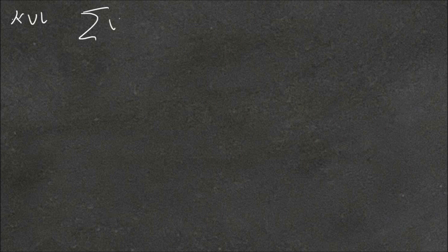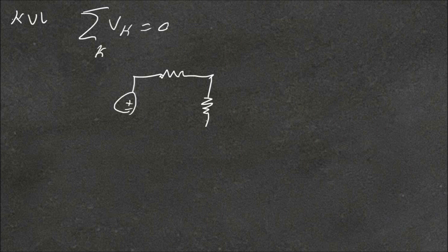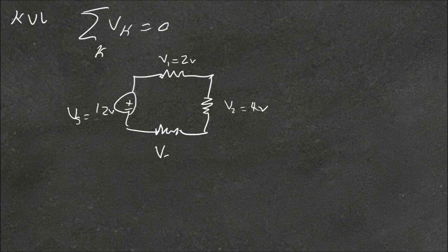So for KVL — Kirchhoff's voltage law — the summation of the voltages for a loop in a circuit is equal to zero. So if we had a circuit with three resistors and a 12-volt battery as our voltage source, the voltage drop on this resistor is 2 volts, the voltage drop on this one is 4 volts, and we don't know the voltage drop on this one. Because it's a voltage drop, we can call it a minus value. In this loop, the summation of voltages would be equal to zero.